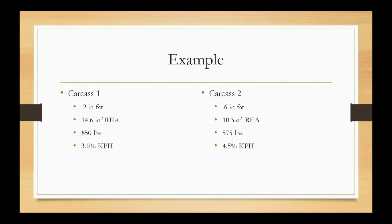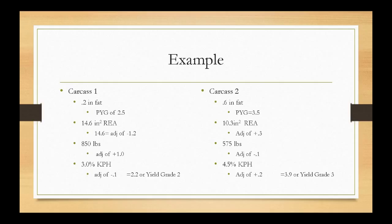Let's do two examples. Carcass 1 has 2 tenths of an inch of fat, a 14.6-inch ribeye, 855 pounds, and 3% kidney, pelvic, and heart fat. Carcass 2 has 6 tenths of fat, a 10.3-inch ribeye, 575 pounds, and 4.5% kidney, pelvic, and heart fat. For carcass 1, 2 tenths of fat gives a PYG of 2.5 — our base is 2.0, and for every tenth of fat we adjust up 0.25, so 2 quarters is 50 cents. That's how you get 2.5.